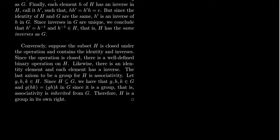We can then ask whether that operation gives us a group operation. By assumption, the identity of G is an identity for the restricted operation, so this operation has an identity. Because H is closed under inverses, every element in the potential subgroup has an inverse. So the inverse axiom is satisfied as well.